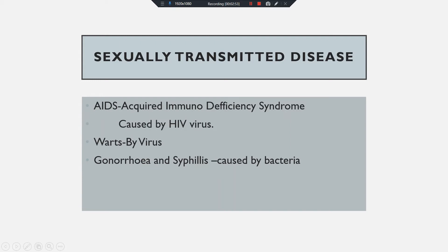Sexually transmitted diseases are of different types and their causing agents are also different. A very common one is AIDS — AIDS is a sexually transmitted disease. The full form of AIDS is Acquired Immunodeficiency Syndrome. It is caused by HIV virus — HIV stands for Human Immunodeficiency Virus. This virus attacks the immune system, and as a result the person suffering from AIDS has very low or poor immunity.